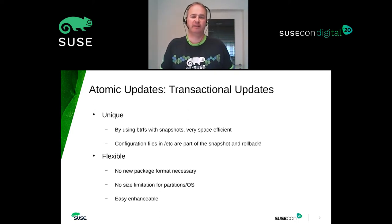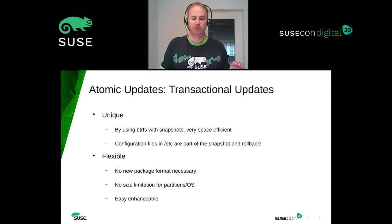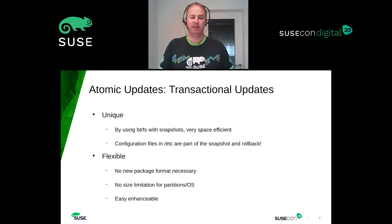That's important when you think about doing a major version update of your software. During the update, configuration files will be adjusted. If you do a rollback and your configuration files are on the read-write root file system — which is not included in the rollback — then the old application will not work anymore because the new config file is wrong and they don't fit together. The admin has to interact manually and fix it, which is something we don't want, especially not in big clusters.